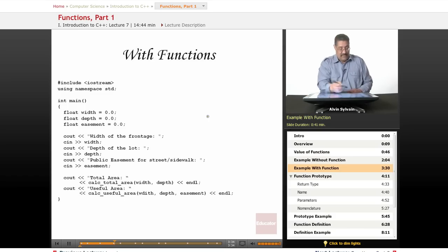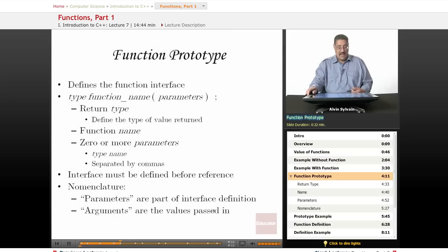Here we've put it into a function. I haven't defined the function here, we're just calling it. We're going to calculate the total area—we're passing in the width and the depth. We're going to get the useful area—we're passing in the width, the depth, and the easement. The functions will do whatever calculations based on the parameters you passed in, and it will return a value which will be used in this expression. In this particular case, it's printing the value out.